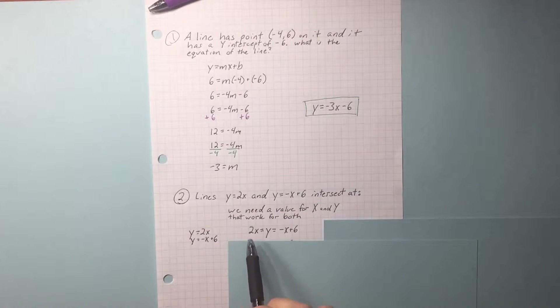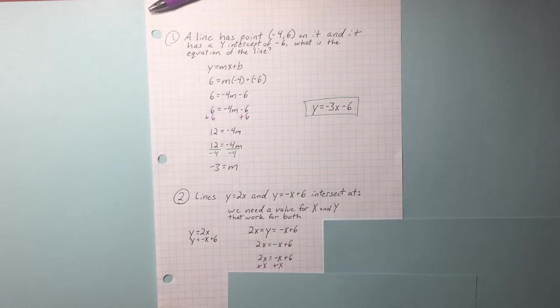Both equal y. 2x equals y. y also equals negative x plus 6. Since they both equal y, they both equal each other. Add x to each side.